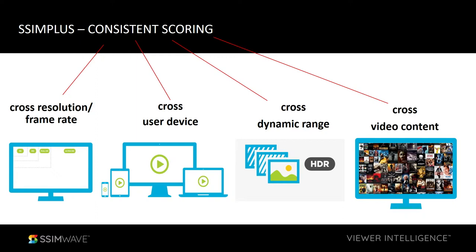We want this measurement to be able to measure things across resolution, frame rate, user device, dynamic range, and video content. If you're doing transcoding, you get a 1080p video coming in and your output has many different resolutions. If the resolution of the reference and test are different, they don't even have the same number of pixels — you can't even directly compute PSNR or VMAF. That's a very straightforward but important requirement.